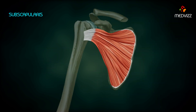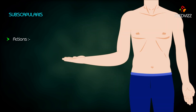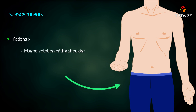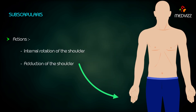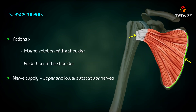Subscapularis: It originates at the medial two-thirds of the subscapular fossa. Insertion is at the lesser tubercle of the humerus. Its actions are internal rotation of the shoulder and adduction of the shoulder. Nerve supply is by the upper and lower subscapular nerves.